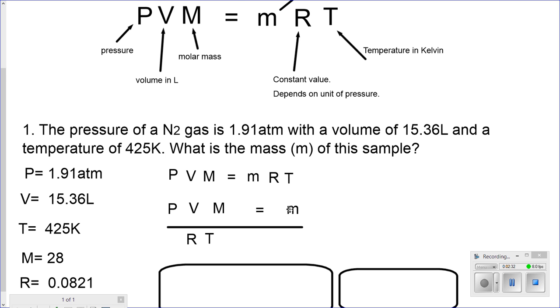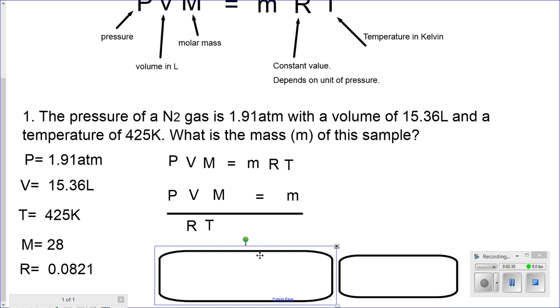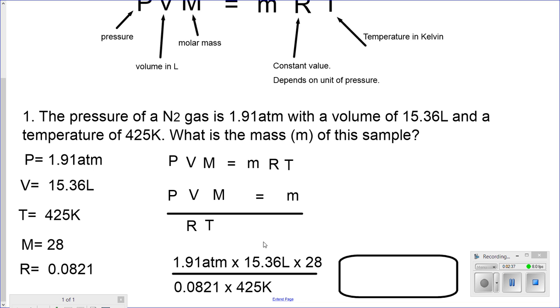Solving for small m, plug in the values. It's 1.91 atm times 15.36 times 28 divided by 0.0821 times 425. Once I plug in these values, my answer is 23.54 grams.